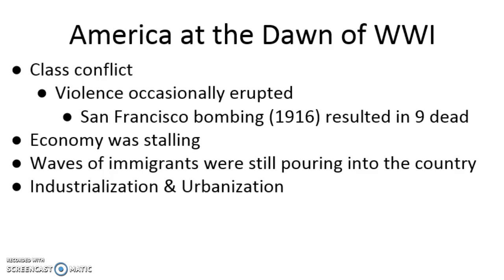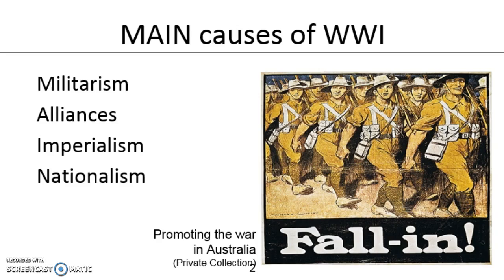So that's some of the contextualization about what's going on when World War I breaks out in Europe. Historians typically refer to the acronym MAINE when talking about why we have involvement in the outbreak of World War I. These are long-term causes: militarism, an arms race really, the entangling alliance system, imperialistic and nationalist rivalries — particularly the economic rivalry between Great Britain and Germany.